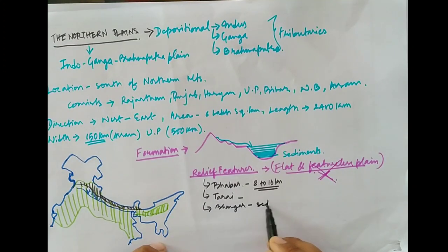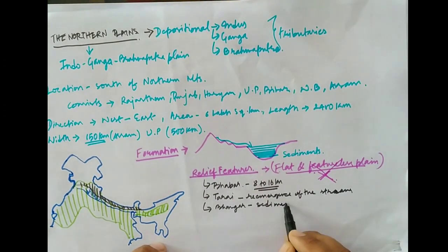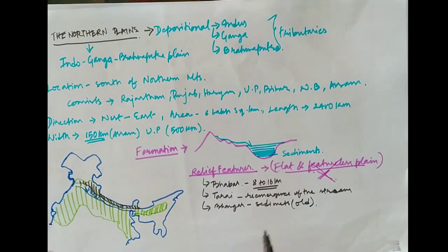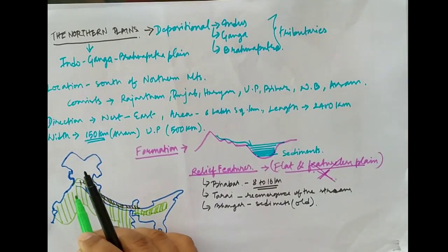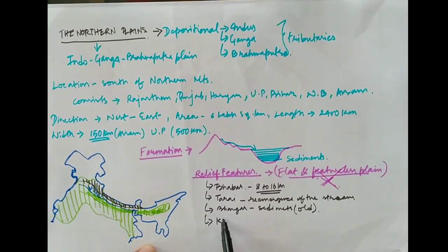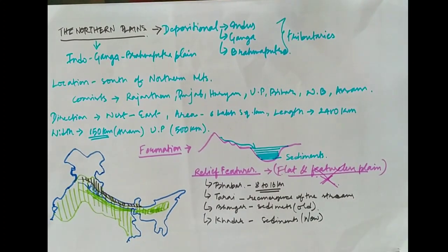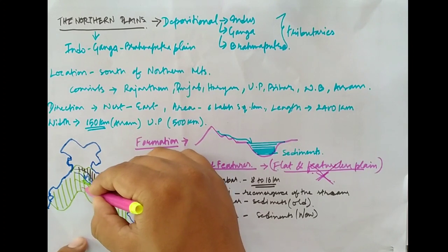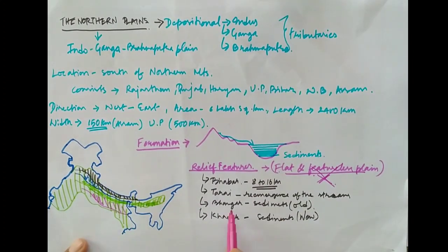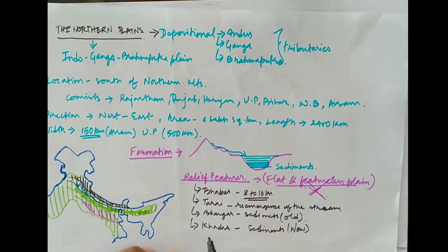Towards the south of Tarai is the Bhangar. The Bhangar soil is old alluvial and is also porous in nature because of the deposition of gravels and pebbles. Towards the south of Bhangar lies the Khadar soil, which is new alluvial soil, replaced every year by the rivers. It is very fertile compared to the Bhangar.